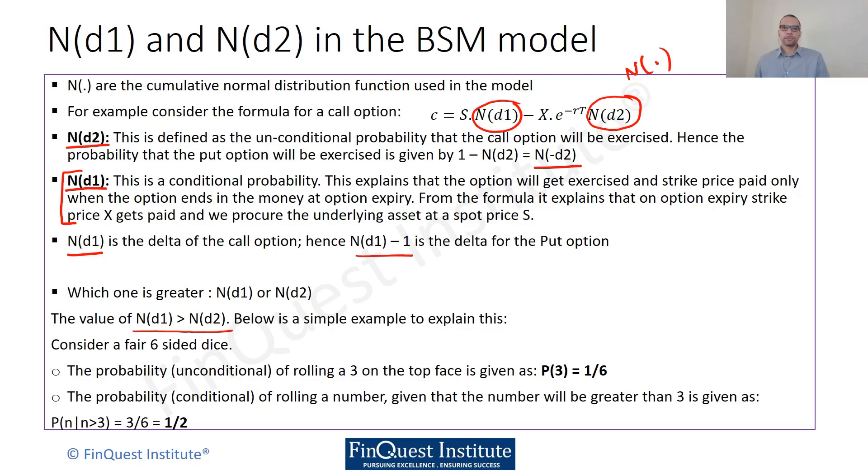The probability of rolling a 3: imagine that I take the roll of a die and just roll it and throw it on the table. Then the unconditional probability of getting a 3 on the top face of the die is 1/6, because we have 6 faces. 6 is the total number of outcomes and I am interested in one specific outcome.